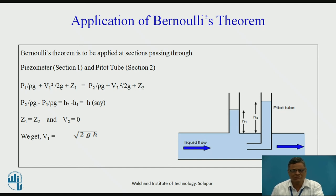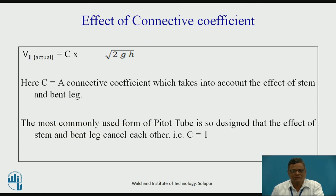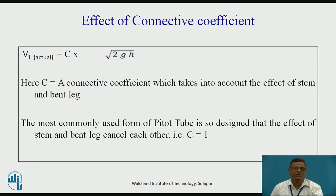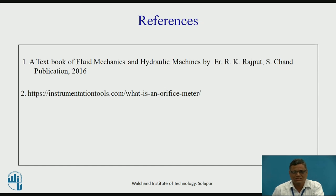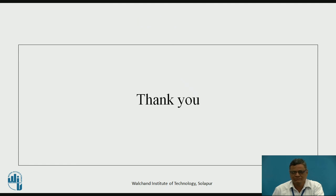The effect of the corrective coefficient C accounts for the influence of the stem and bent leg of the Pitot tube, giving V_actual = C × √(2gH). The most commonly used Pitot tube is designed so that the effects of the stem and bent leg cancel each other, making C = 1, and therefore V_actual = √(2gH). Thank you.